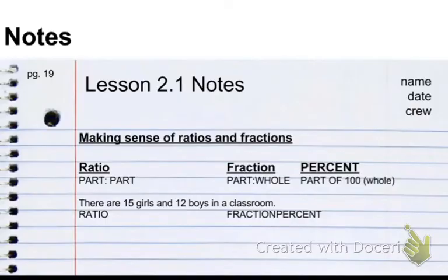Our notes for today look like this. We're going to be on page 19. It's lesson 2.1. We want to have name, date, and crew at the top. And our main heading is making sense of ratios and fractions.